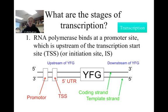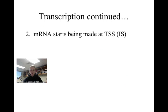The first stage of transcription is the binding of RNA polymerase to a promoter site, which is located upstream from both the transcription start site and the gene of interest. Once the RNA polymerase is bound to the promoter, transcription starts at the transcription start site, also known as the initiation site.